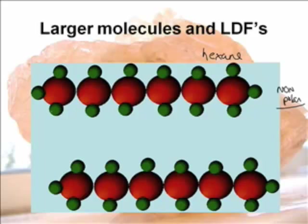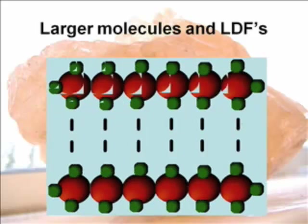Basically what's going on is that because of the random movement of electrons, you're going to have lots of different momentary dipoles. And what's going to happen is, instead of having one possible London force, you will have lots of London forces.